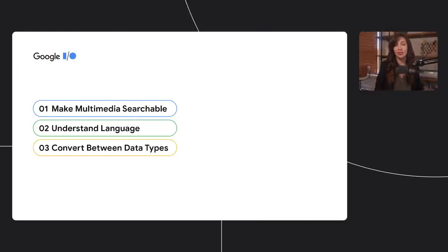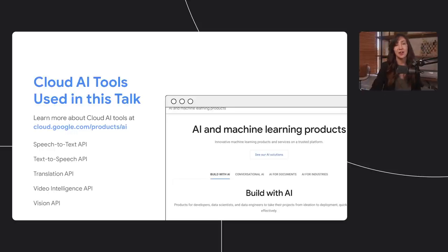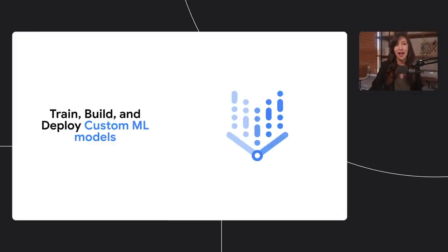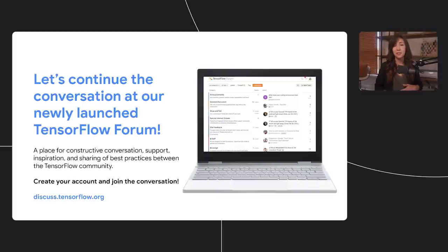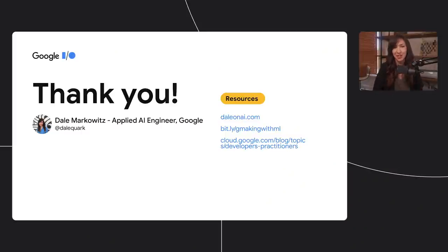We covered three use cases for machine learning: dealing with cumbersome data types to make them searchable, understanding language, and converting between data types. I hope now that you have these frames in mind, you see ML problems everywhere and decide to start solving them yourself. If you do, I hope you use Google Cloud AI tools — the ones I used in this presentation are user-friendly, don't take any data science expertise, and are sort of plug and play. If you want to go further and develop custom machine learning models, I'd highly suggest checking out Vertex, Google's platform for training, building, and deploying custom ML models. If you want to connect with other ML enthusiasts, check out the TensorFlow forum. You can find how to build these projects on Dale on AI dot com and the Google Cloud blog. Thanks for watching!